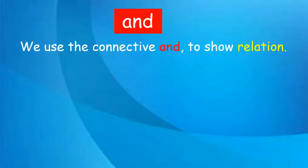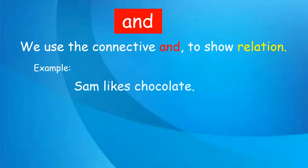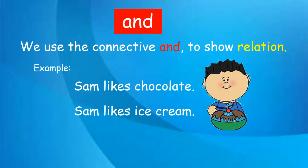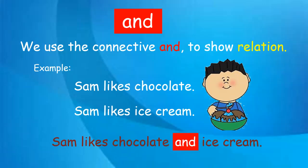Let us learn about the connective 'and'. We use the connective 'and' to show relation. Example: 'Sam likes chocolate' — that is one sentence. The second sentence: 'Sam likes ice cream.' We can put both sentences together using the connective 'and': 'Sam likes chocolate and ice cream.' It makes your sentence more interesting and avoids repetition.